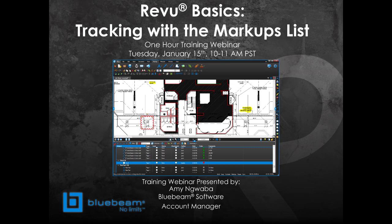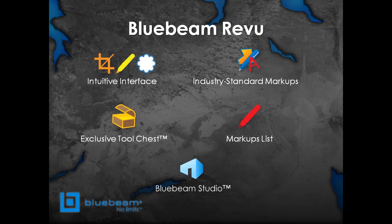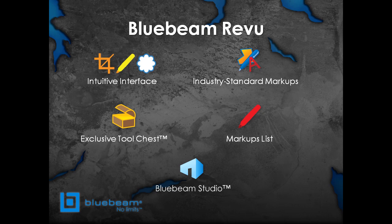About how to use the markups list to track annotations. As you probably already know, Bluebeam Review is a smart, simple PDF solution designed to help you take your workflows digital. After today's training you should be equipped to use our core markup features for annotating documents and tracking them in the markups list. You're going to learn how to do basic offline collaboration and create custom statuses and custom columns to add additional data fields to your markups list.